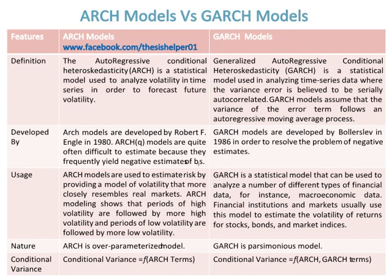GARCH models assume that the variance of the error term follows an autoregressive moving average process. ARCH models were developed by Robert F. Engel in 1980. ARCH-Q models are quite often difficult to estimate because they frequently yield negative estimates. Whereas, GARCH models were developed by Bollerslev in 1986 in order to resolve the problem of negative estimates.